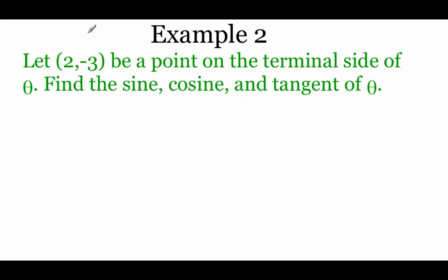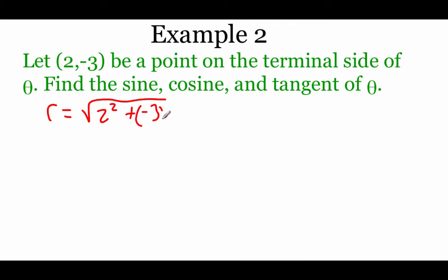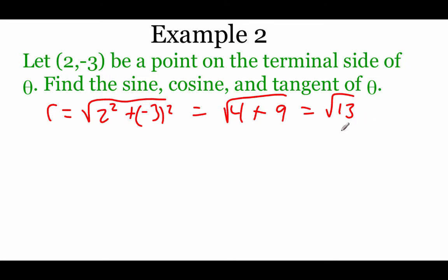In example 2, the ordered pair 2, negative 3 is on the terminal side of angle theta. We again find r: square root of 2 squared plus negative 3 squared, which is square root of 4 plus 9, giving us the square root of 13. This one doesn't simplify as nicely, but that's okay.